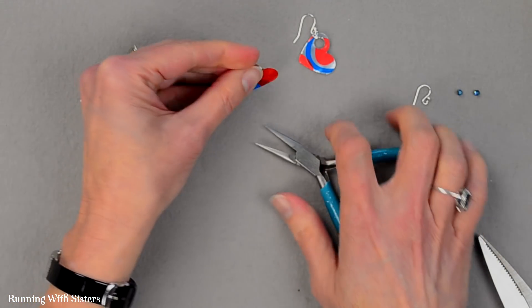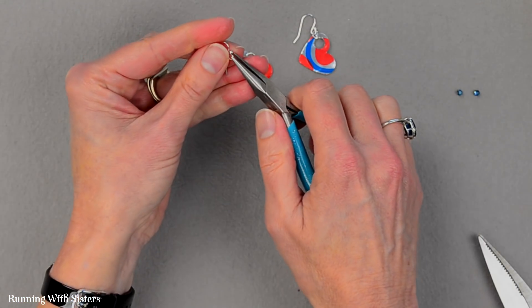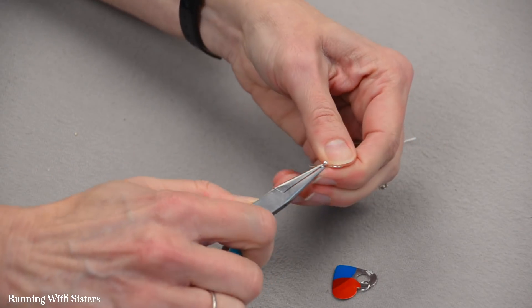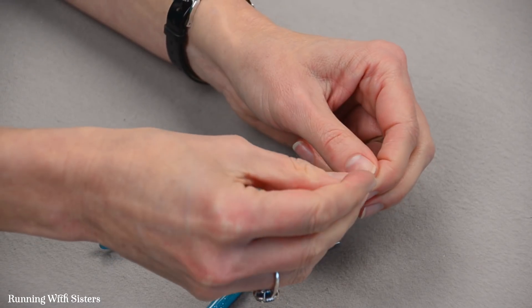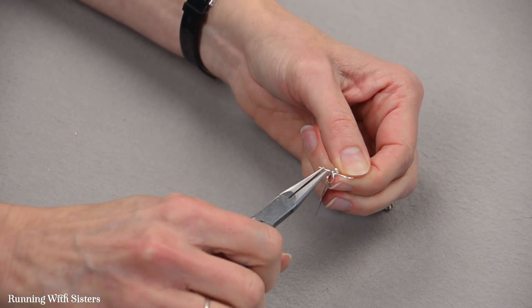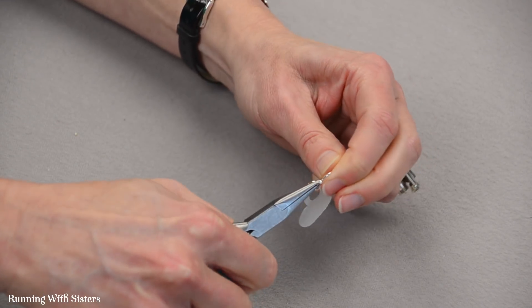And I'll do that with my other earring as well. I'll open up the earring wire, the loop like that. Slide the jump ring over that little loop and then close it.